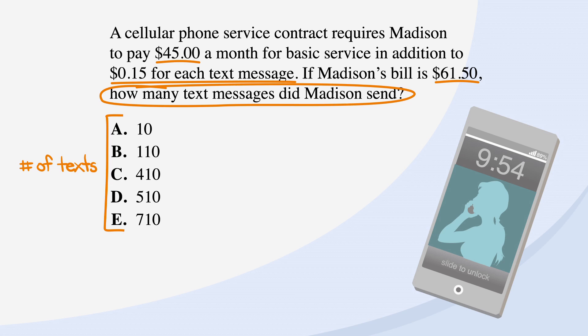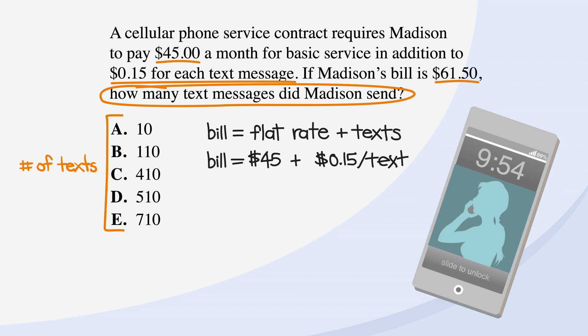Now, let's identify the number we're trying to get. If we plug in the right answer choice, we should get that Madison's bill was $61.50 — that's our target number. We're told that customers pay a base rate of $45 and an additional 15 cents per text. If the bill equals the flat rate plus the cost of texts, we can plug in $45 plus 15 cents per text. We're ready to back solve.